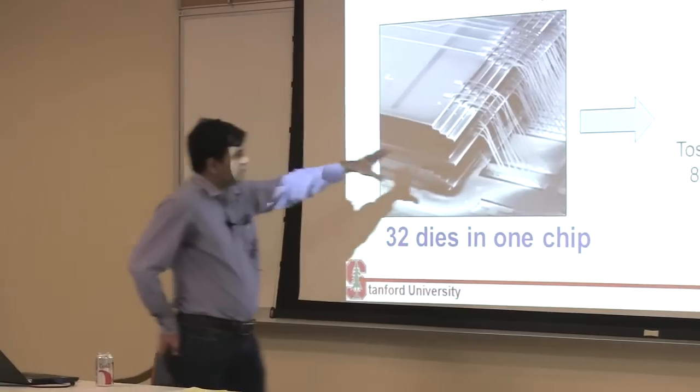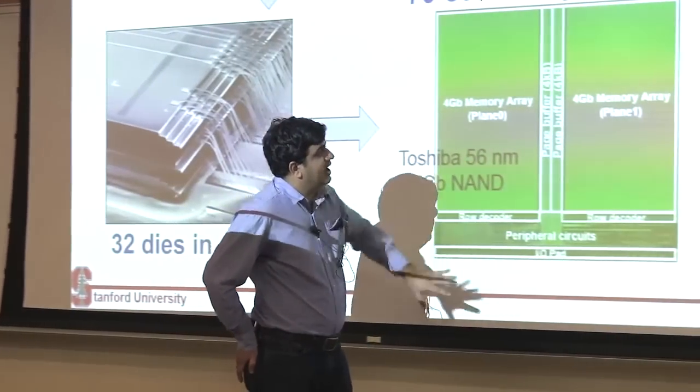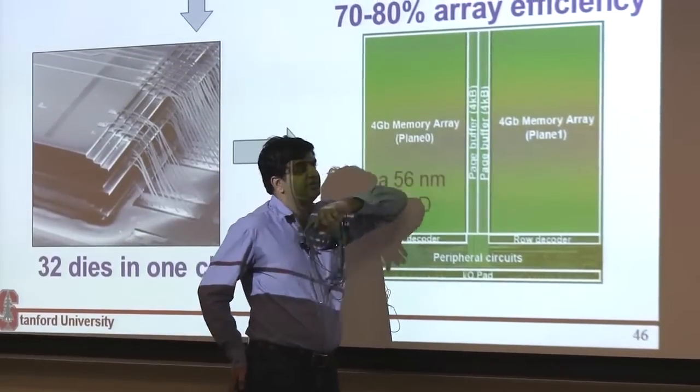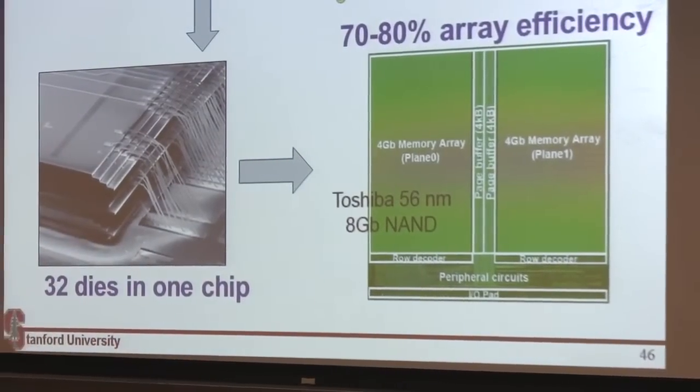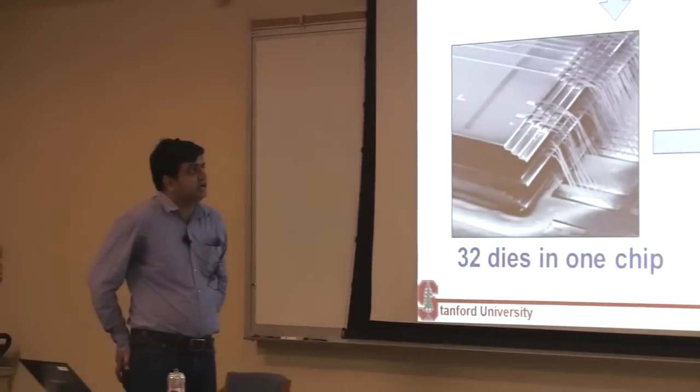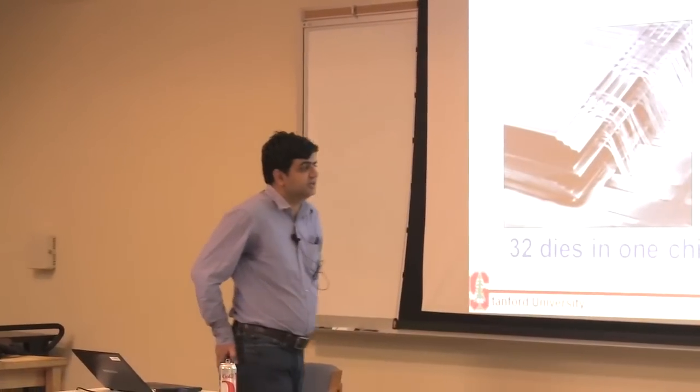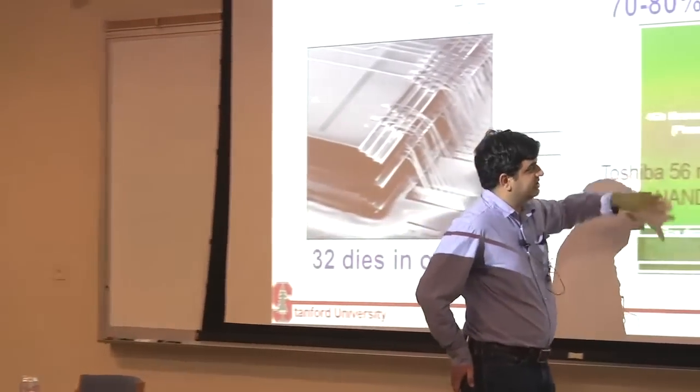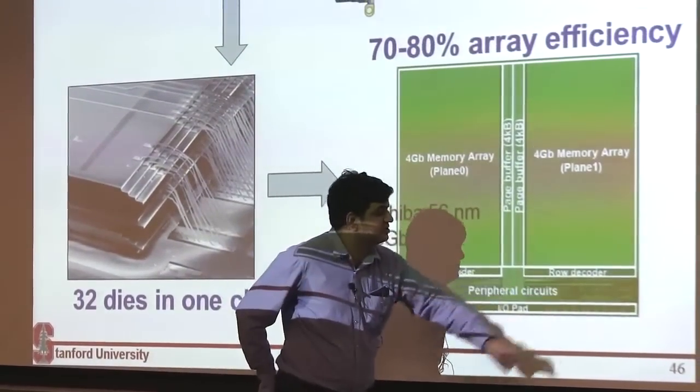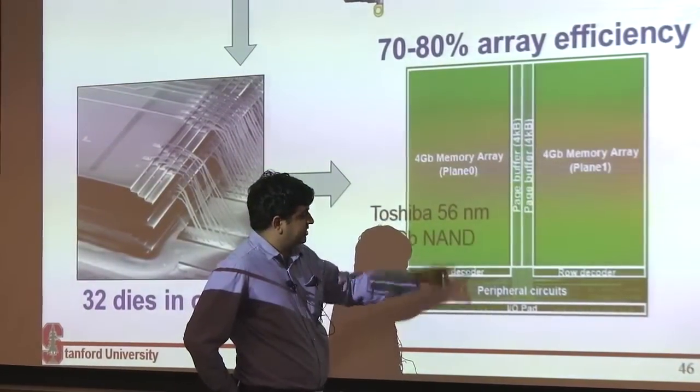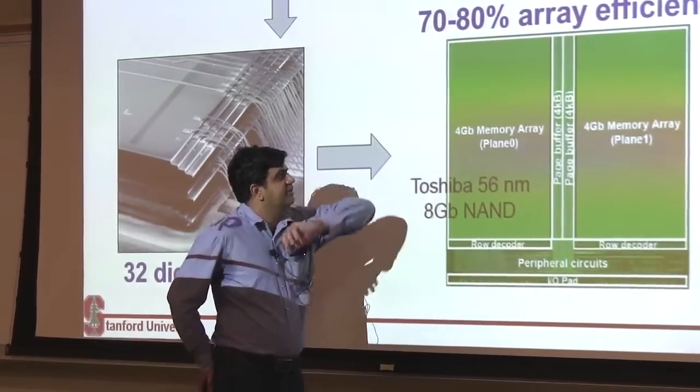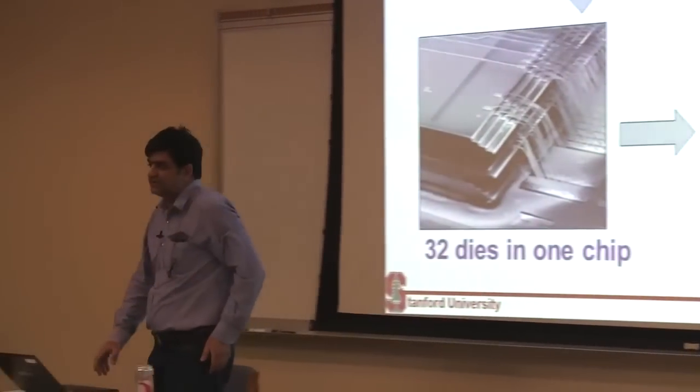If you look at each one of these dies, it's essentially nothing but a large array of memory. Often memories are defined by this term called array efficiency—that is how much die area is covered with the actual memory cell. A DRAM, for example, has an array efficiency of 60%. A NAND flash has an array efficiency of 90% to 80%. That is, more than 80% of this die is just these NAND memory cells. The rest, the 20%, is this peripheral circuitry—your charge pumps that would be required to generate that high voltage, and your row and page decoders. But still 80% of the area is nothing but these banks of memory.